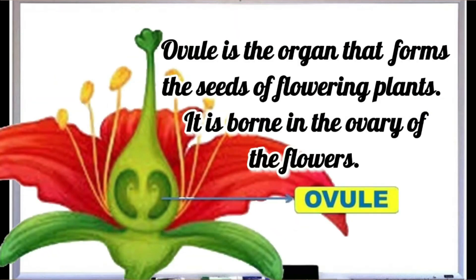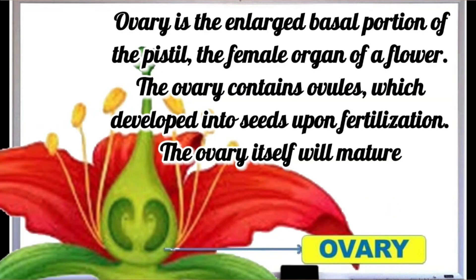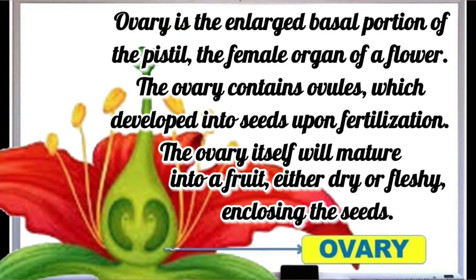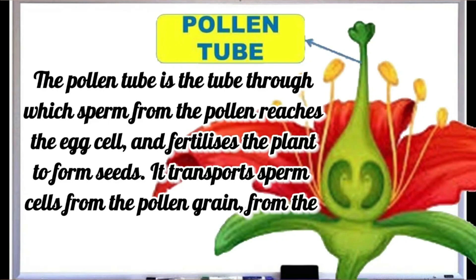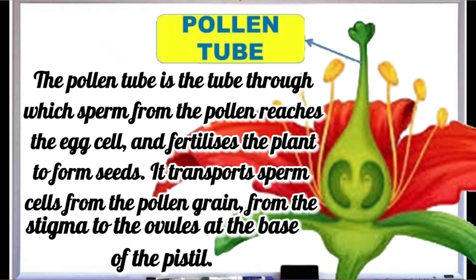Ovule is the organ that forms the seeds of flowering plants. It is borne in the ovary of the flower. Ovary is the enlarged basal portion of the pistil, the female organ of a flower. The ovary contains ovules which develop into seeds upon fertilization. The ovary itself will mature into fruit, either dry or fleshy, enclosing the seeds. The pollen tube is a tube through which sperm from the pollen reaches the egg cell and fertilizes the plant to form seeds. It transports sperm cells from the pollen grain from the stigma to the ovules at the base of the pistil.